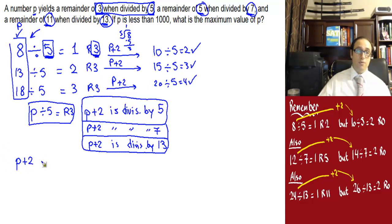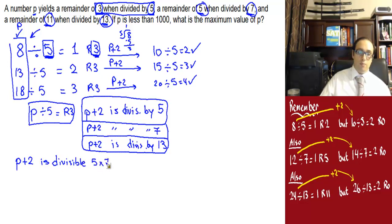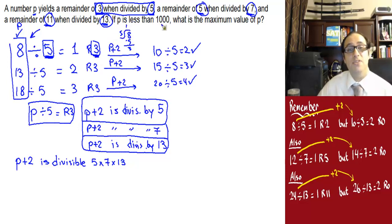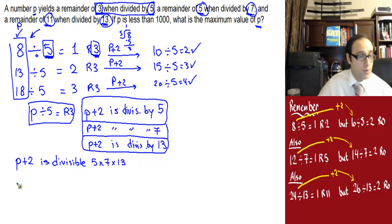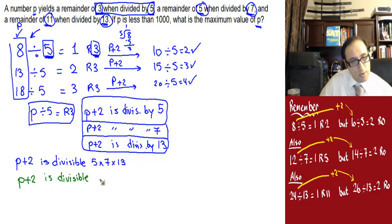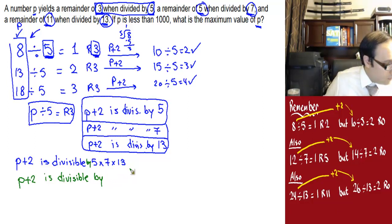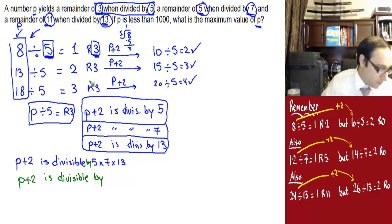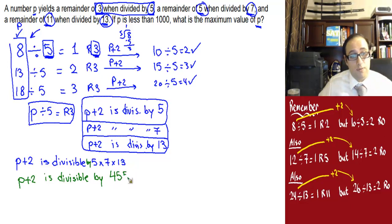That means p plus 2 is divisible by the product of these three numbers: 5, 7, and 13. The question asks: if p is less than 1000, what is the maximum value of p? So p plus 2 is divisible by 5 times 7 times 13. 5 times 7 is 35, and 35 times 13 is 455.